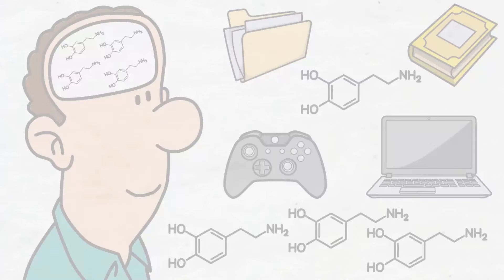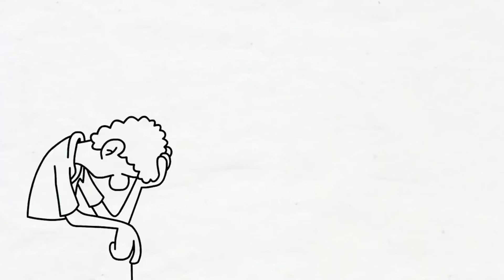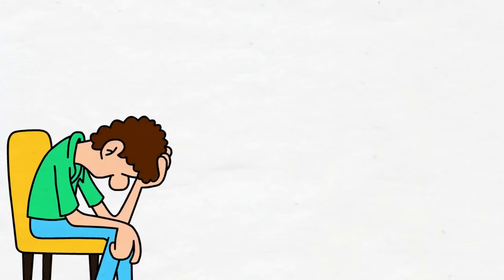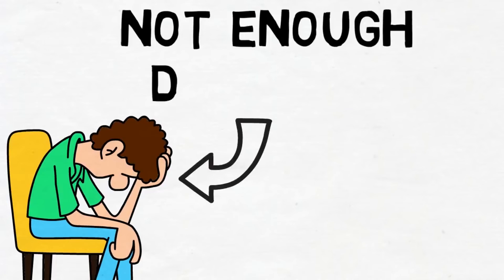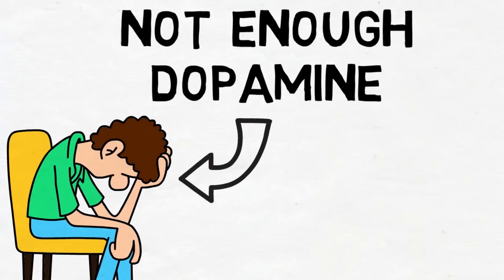This is one of the reasons why drug addicts who try to quit have a hard time adjusting to a normal life. Their dopamine tolerance gets so high that normal life isn't able to match it. They become like those rats from previous experiments who have no motivation to do anything if there's not enough dopamine release.